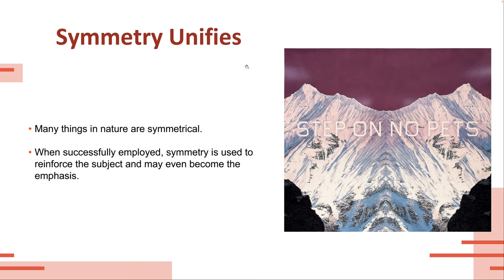Many things in nature are symmetrical — we talked about the human face, some leaves, the way some vegetables grow. There's a specific type of cauliflower or broccoli that grows in a fractal pattern, which is really interesting — it looks 100% fake but it's like this weird fractal, almost a golden ratio fractal kind of pattern. We see it in nature all the time, and in art when it's created. When successfully employed, symmetry can reinforce the subject or even become the emphasis of your piece.